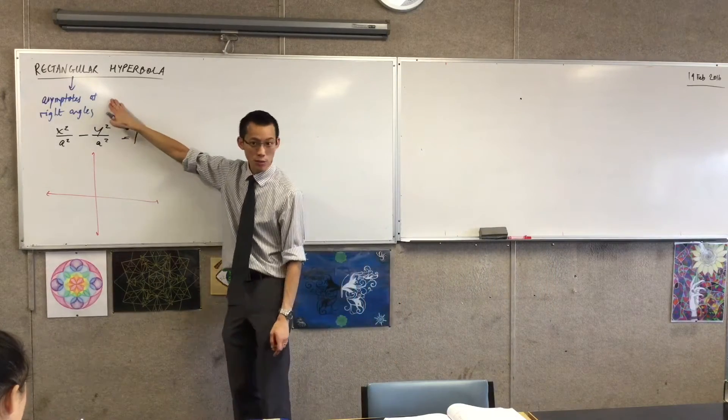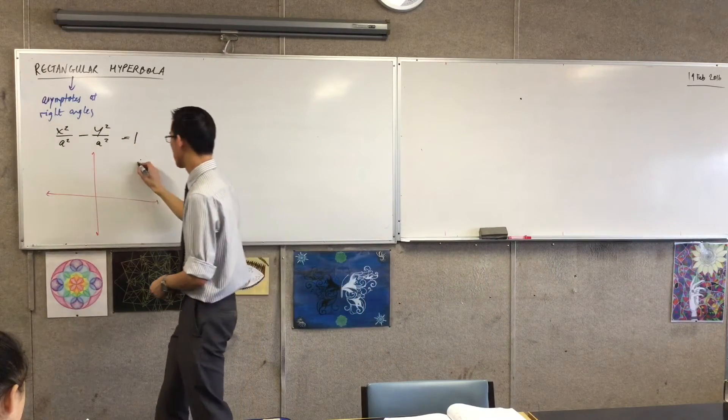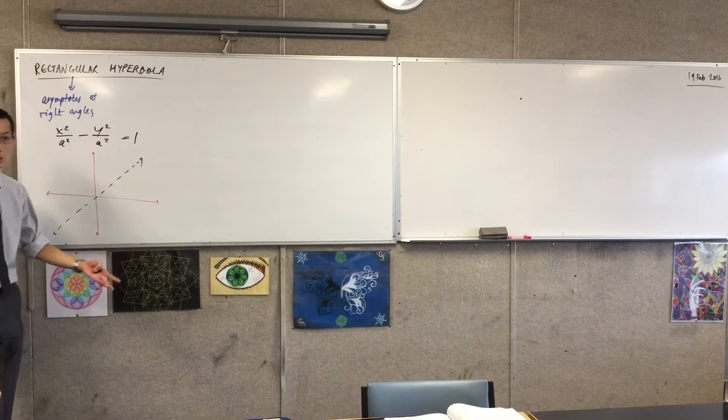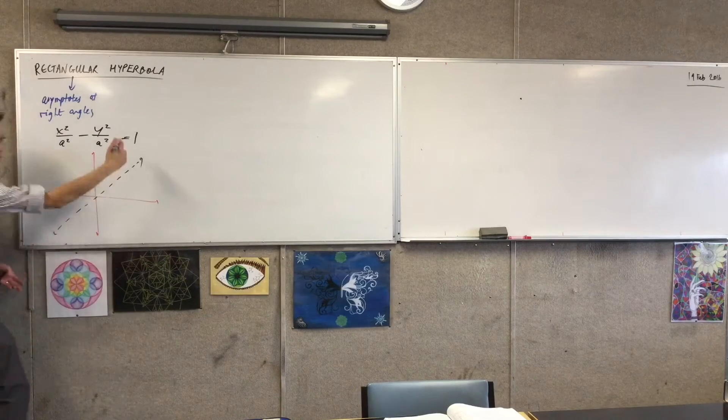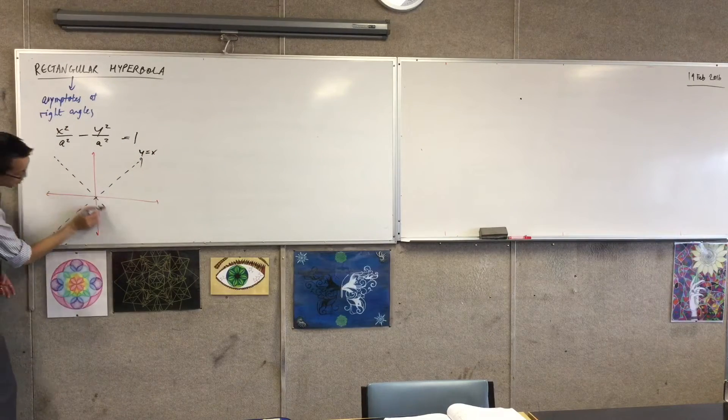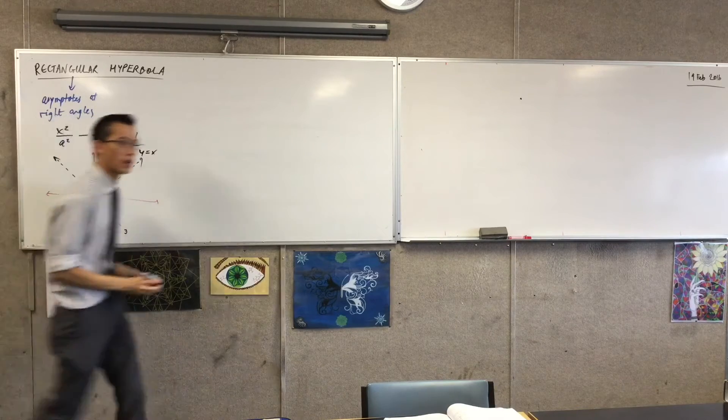Now knowing that they are at right angles, we showed before that the two asymptotes for this guy are going to be y equals plus or minus x. Here's y equals x, and I'm going to have y equals minus x going down here.